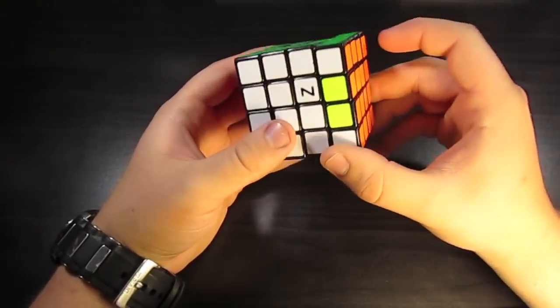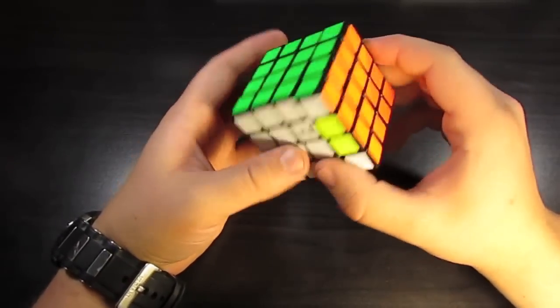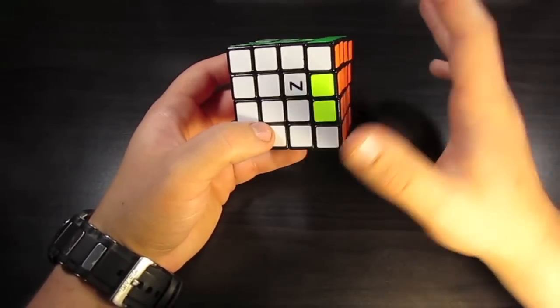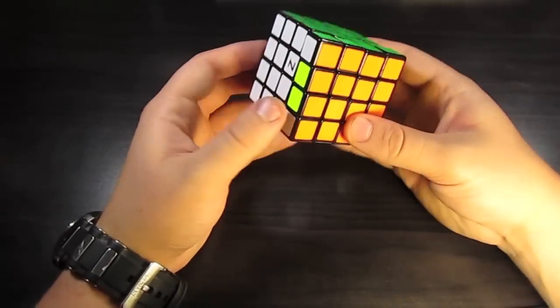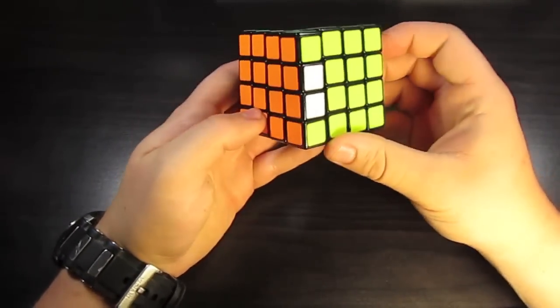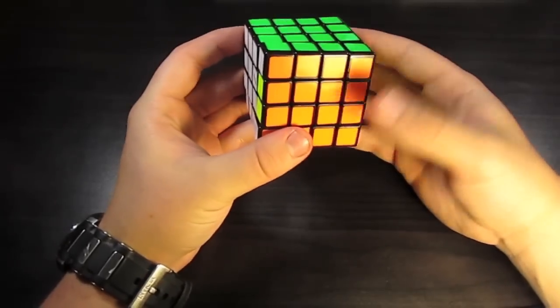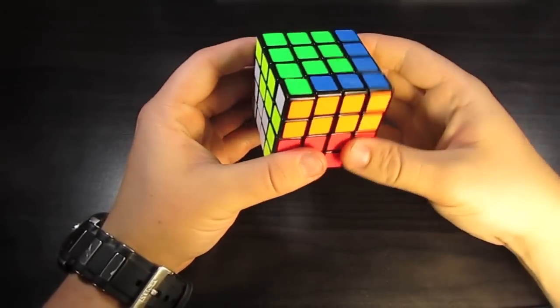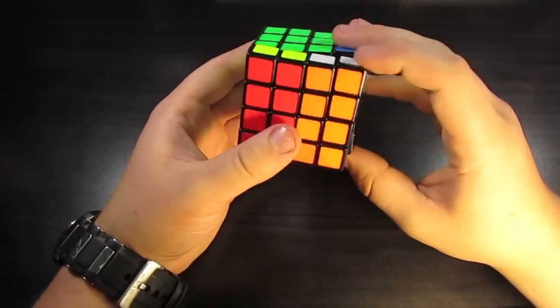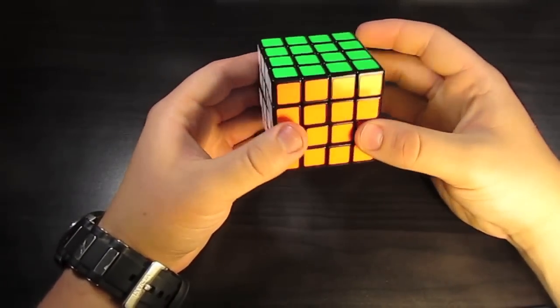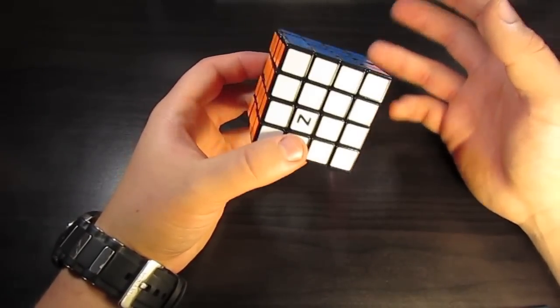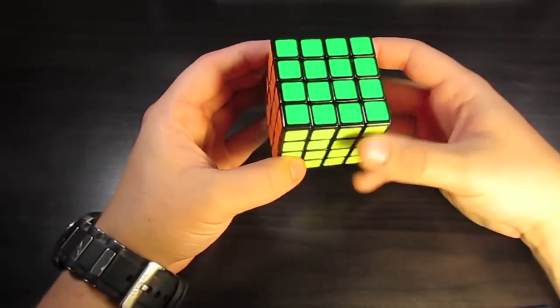Okay, and now, this is an easier parity algorithm, but we'll still solve it as a cuboid without using any parity algorithms at all. So, you want to do the cuboid algorithm that fixes these, which looks like this. And there, you solved it without using any 4x4 parity algorithms, just solving it as a cuboid.